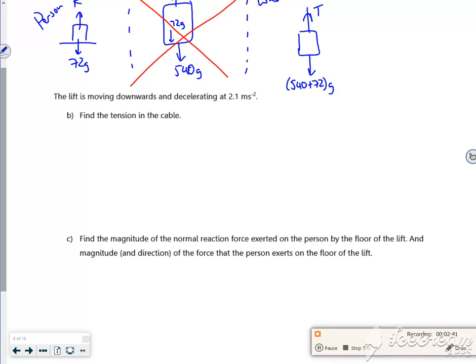For the tension in the cable, we want the whole system - the third diagram. It's decelerating, so it's moving downwards and decelerating. I've got my combined mass of 612. I've got tension T. It's traveling downwards but decelerating.